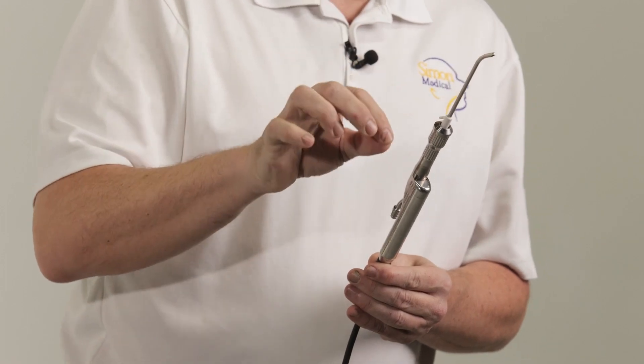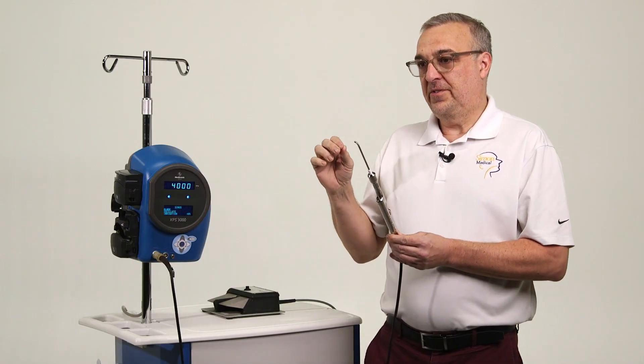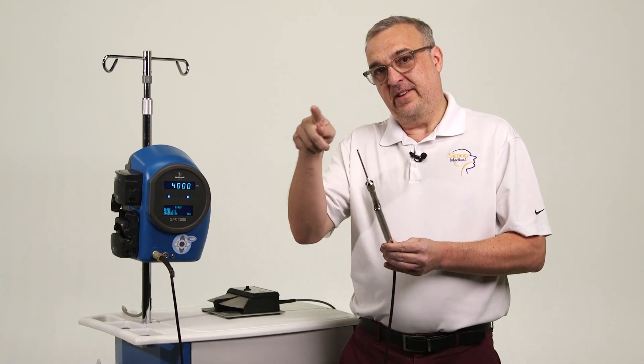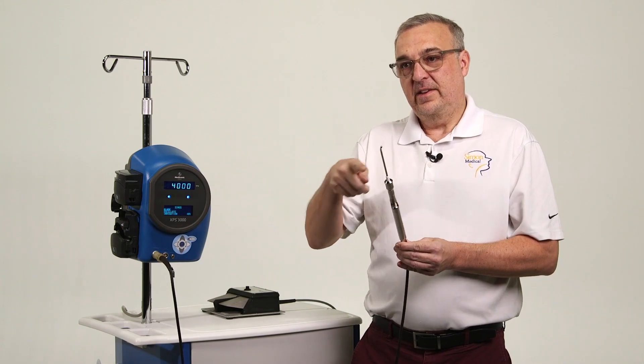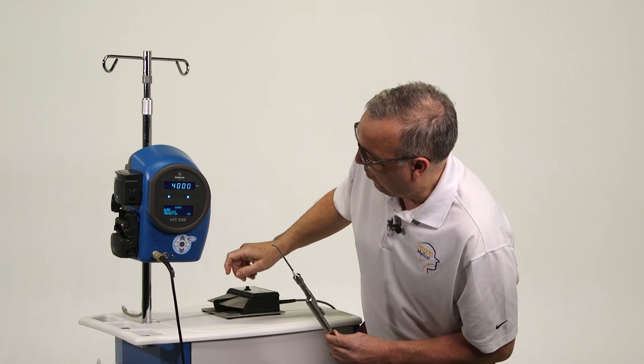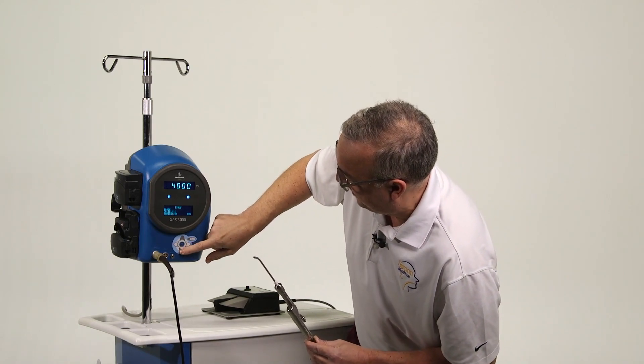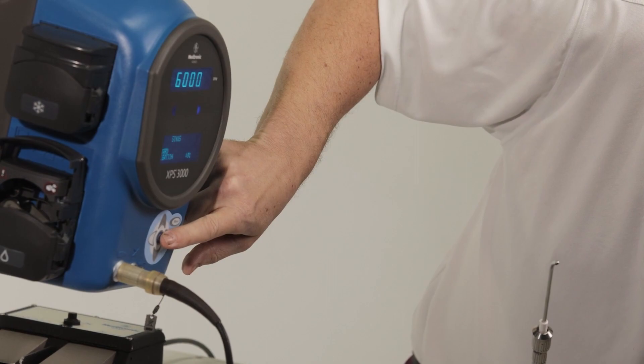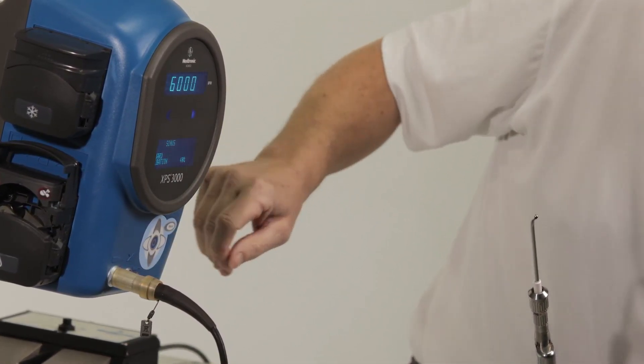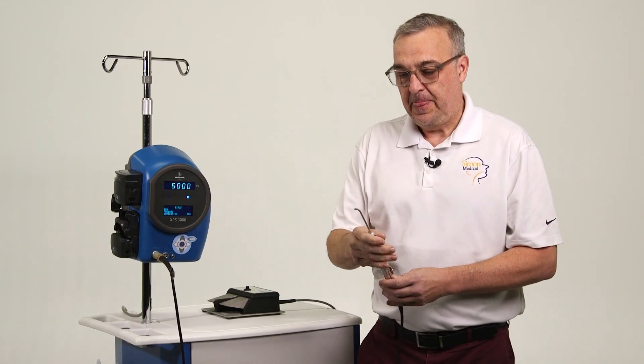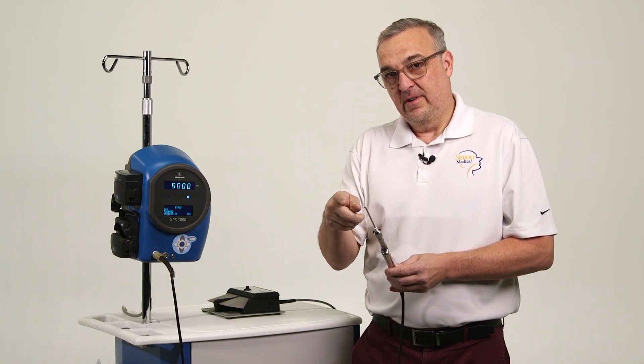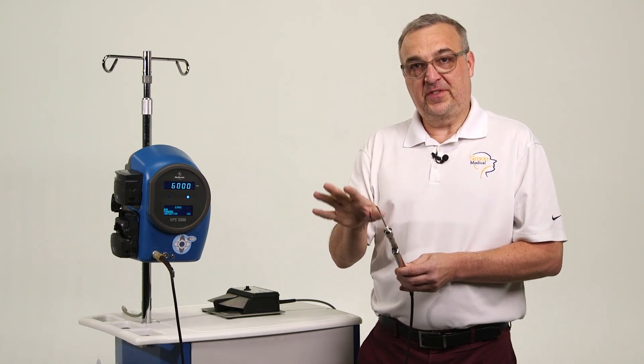There are certain scenarios like a laryngeal blade or certain sinus cases that are very delicate where you may want that blade to rotate, just clockwise, just in a rotation versus an oscillation. If we want to do that, we press the middle button and now we're on forward setting. So if I press this, now that blade is rotating 360 degrees in one direction. Not done all the time, but just so you know, it's there.